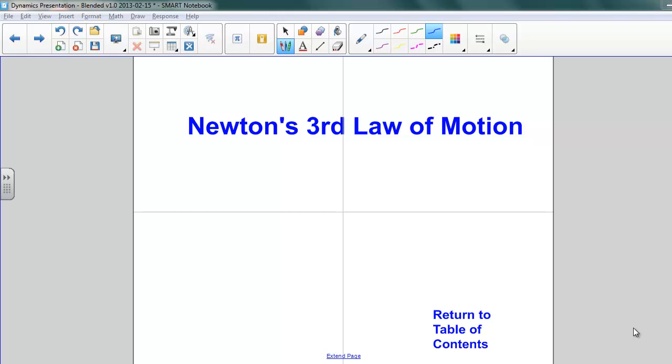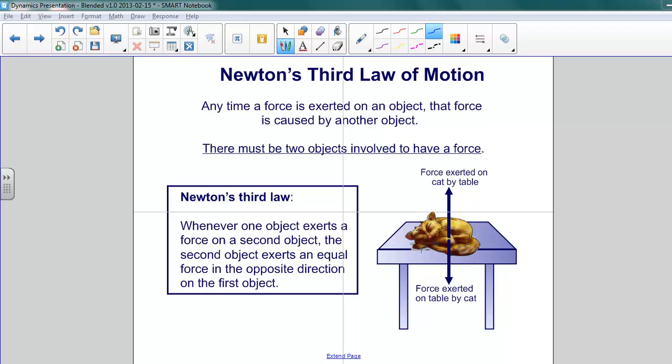Newton's Third Law of Motion. Now let's explore Newton's Third Law of Motion. Consider this: any time a force is exerted on an object, that force has to be caused by another object. That is to say, there must be two objects involved to have a force.